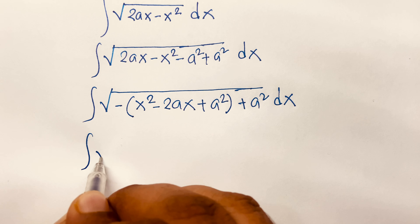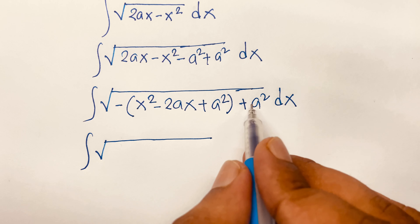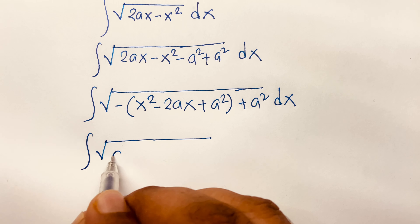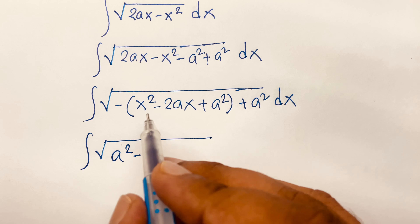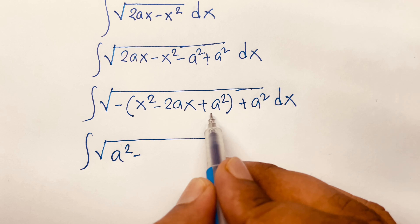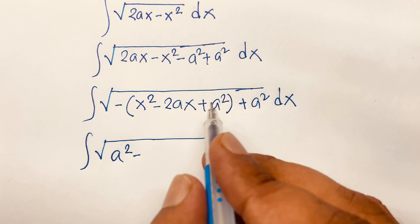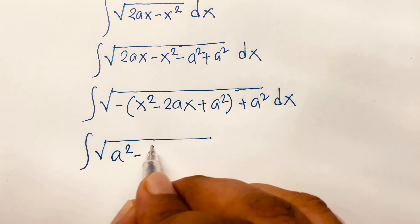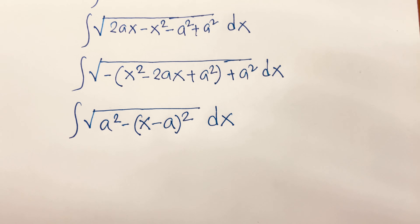I can write the integral of √(2ax − x² − a² + a²) dx. I just add a² and again subtract a², so there is no change.